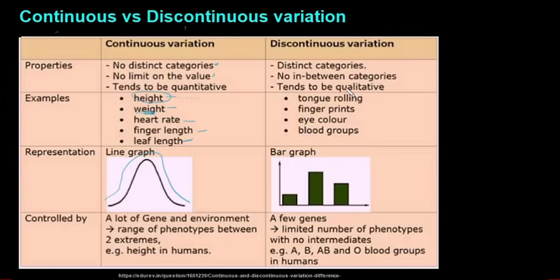Discontinuous variation has distinct categories with no in-between. An example is tongue rolling - you can either roll your tongue or you cannot. Your fingerprints are a form of discontinuous variation because this never changes - you're born with your fingerprints and they stay like that for life, as will your eye color and blood groups. Whether your blood group is A, B, or O, your blood group never changes. There are distinct categories, so we can place them in bar graphs or histograms. That is the end of the first part of evolution.